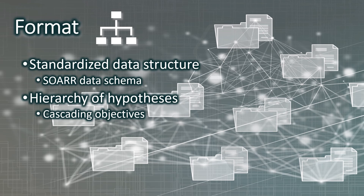So we discussed the method for ADEPT planning. Now we'll talk about the format. The format for ADEPT style planning is basically the use of a relational database that can be searched, sorted, and queried for planning information. This database is created using a standardized data structure that I refer to as SOARR — S-O-A-R-R. The data schema — the map of the data structure — is developed in a hierarchical format that allows for a hierarchy of hypotheses and cascading objectives. The structure also allows for decision-making trees to be applied to many actions of the plan itself.